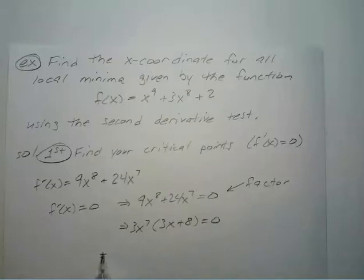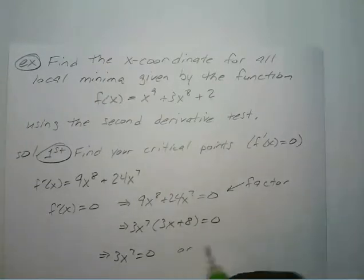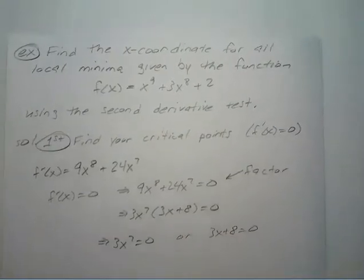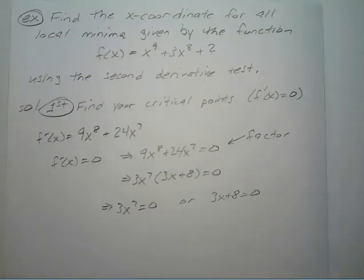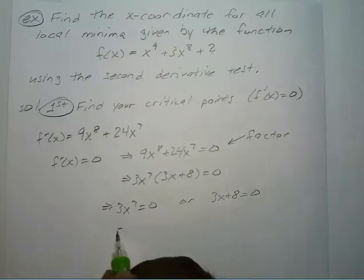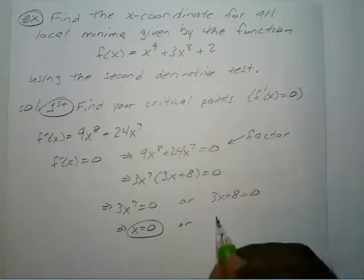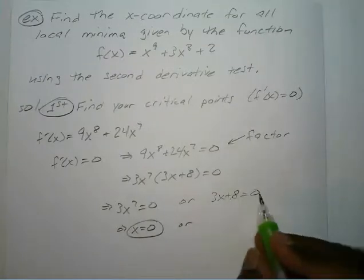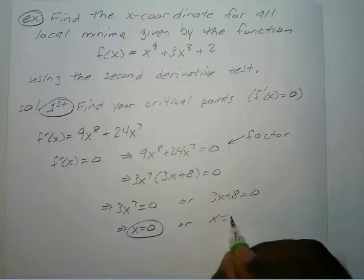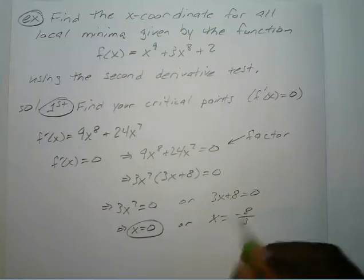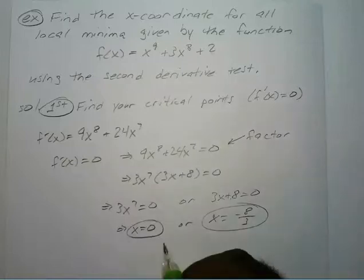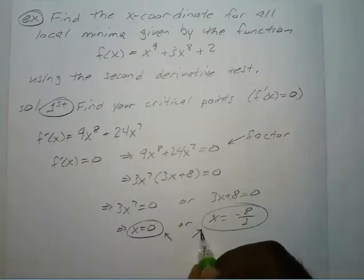So if we set both factors to zero: 3x to the 7th equals zero, or 3x plus 8 equals zero. Dividing and taking the 7th root gives x equals zero. Or, subtracting 8 and dividing by 3, you get x equals negative 8 over 3. Those two are your critical points.